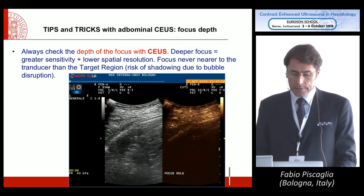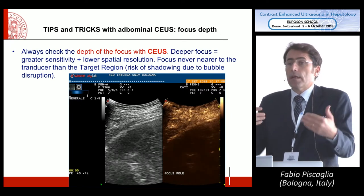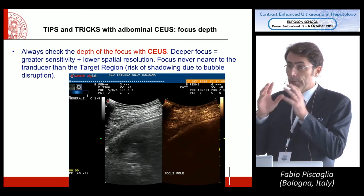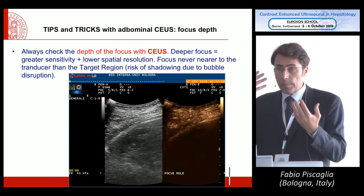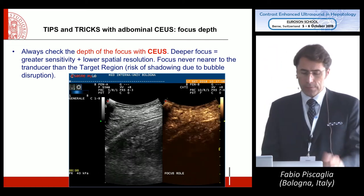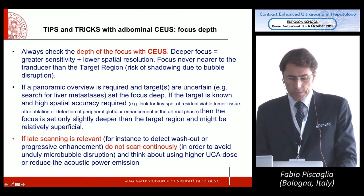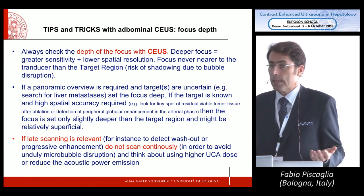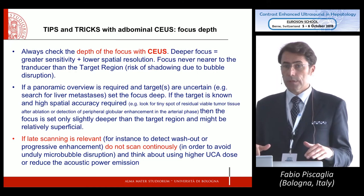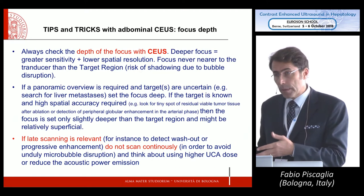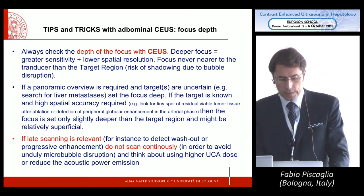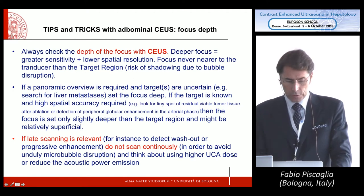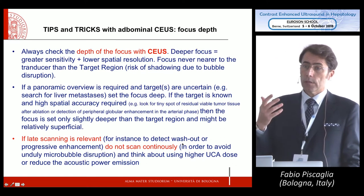As a general rule, the level of focus should be set a bit deeper than the target area you are investigating. You might say, put it always as deep as possible to avoid shadowing — but if you put it far from the region of interest you decrease spatial resolution. So as a general rule, if you don't know your target region, for instance when looking for metastases, put the focus deep. If your region of interest is relatively superficial, set it just a bit deeper than the lesion.